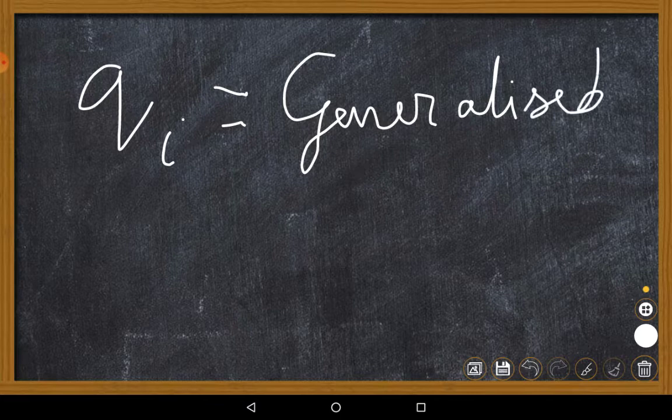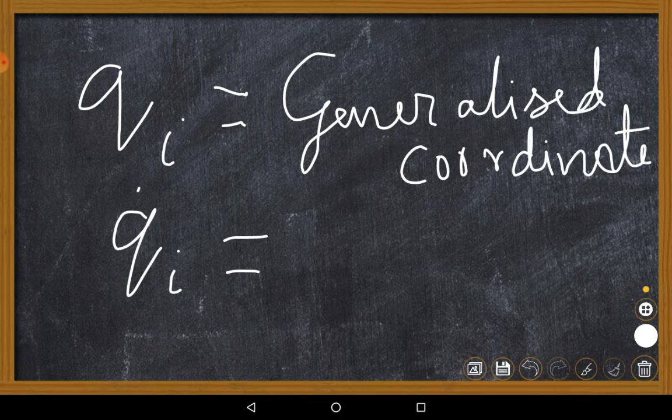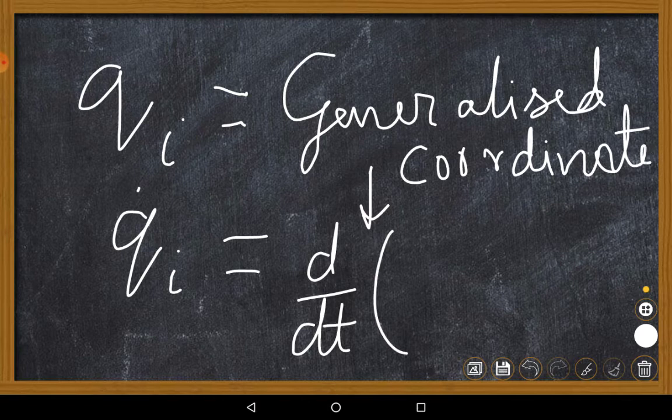That generalized coordinate might seem to be a vague idea but it has more to it — I will deal with generalized coordinates in a later video. For now, just know that q is some kind of coordinate; you are familiar with Cartesian coordinates and polar coordinates, but this is a more general coordinate. qi-dot is the first order derivative — basically d/dt of this generalized coordinate.